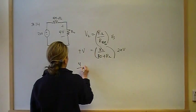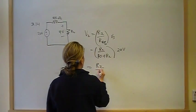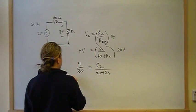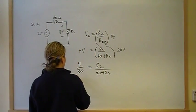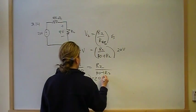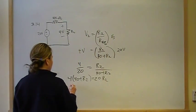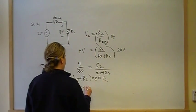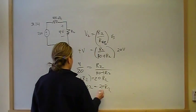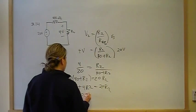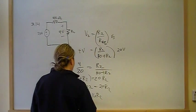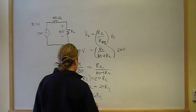So, then 4 over 20 equals R2 over 40 plus R2. Cross-multiply gives us 4 times 40 plus R2 times 20 equals 20R2. 160 is equal to 16R2. So, R2 is equal to 10 ohms.